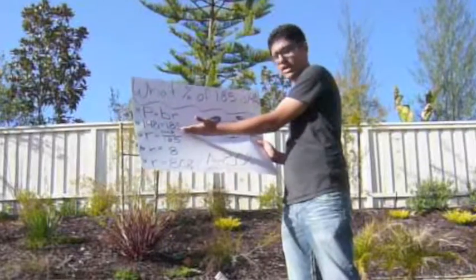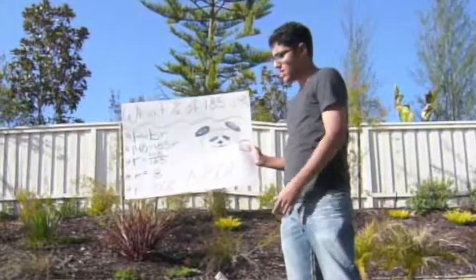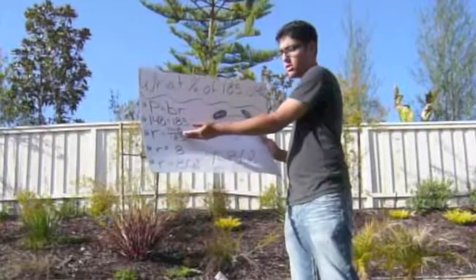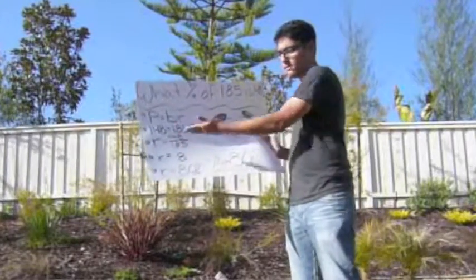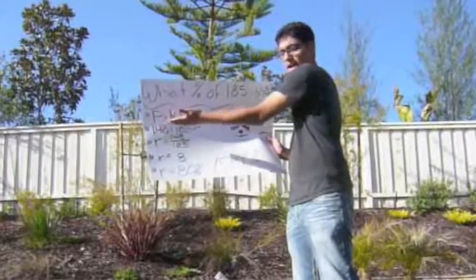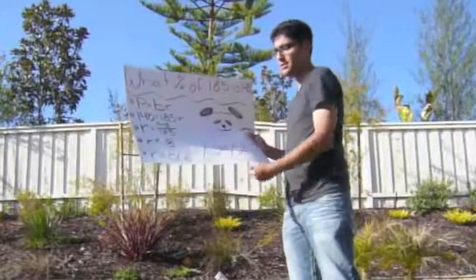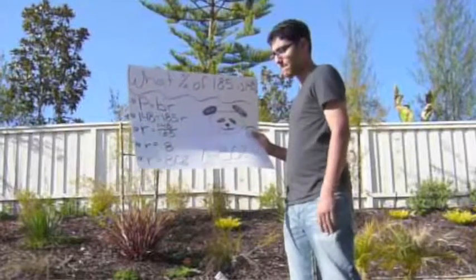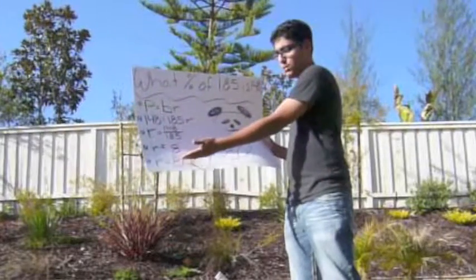148 is equal to 185R. Then R equals 148 over 185, because you divided this by that. Now for step four, the answer: R equals 0.8.